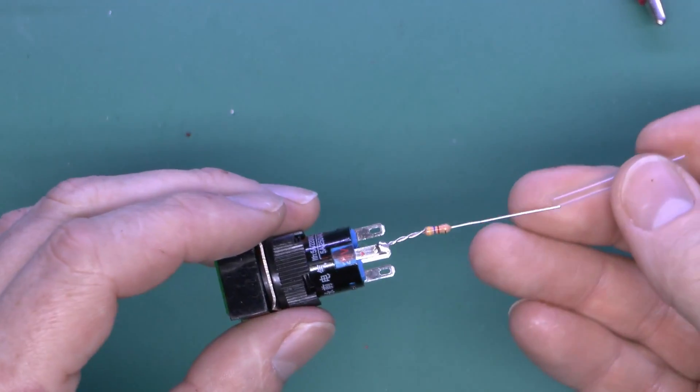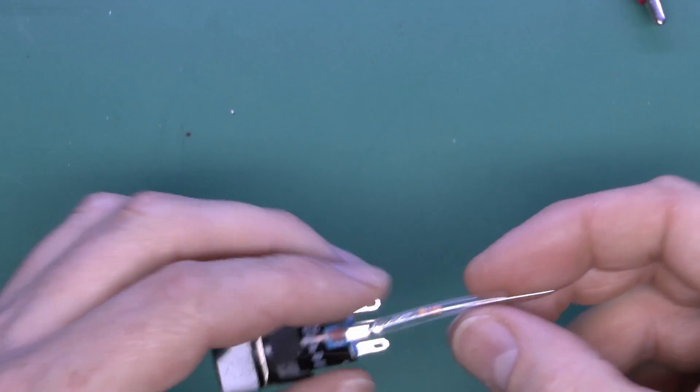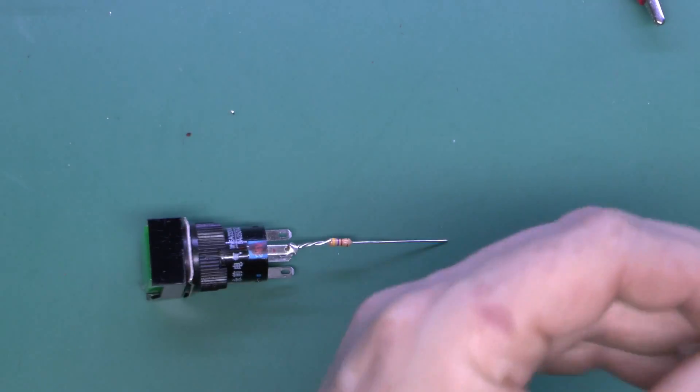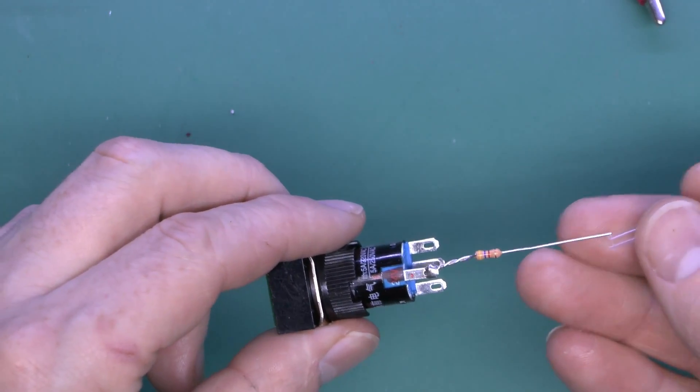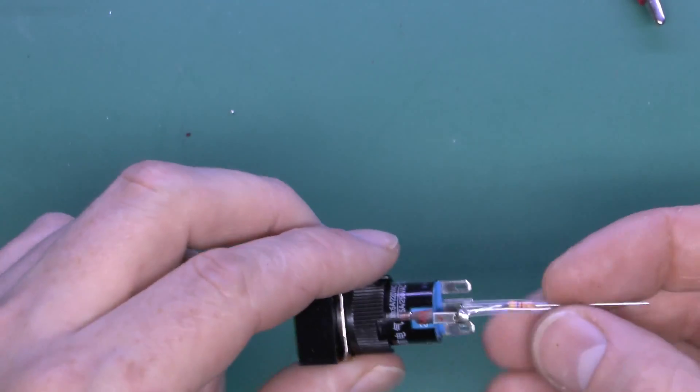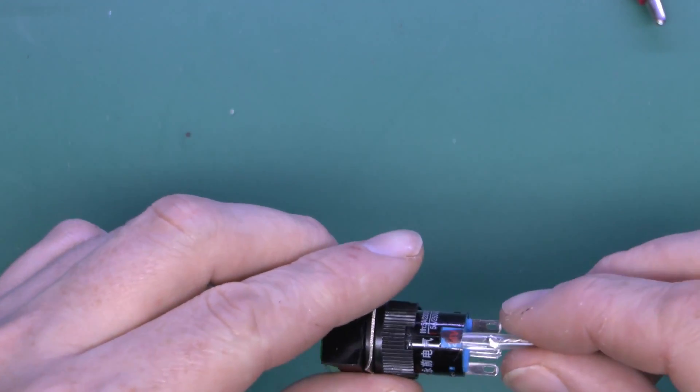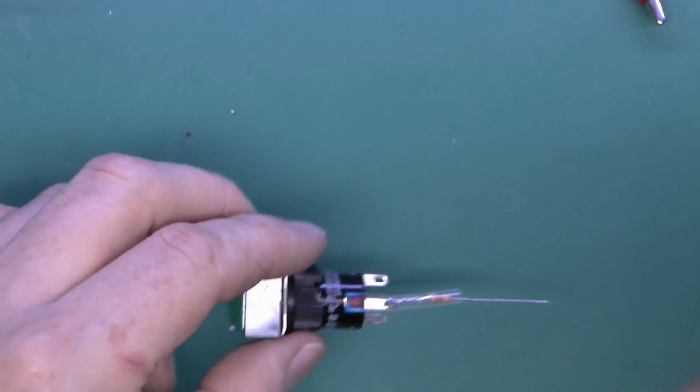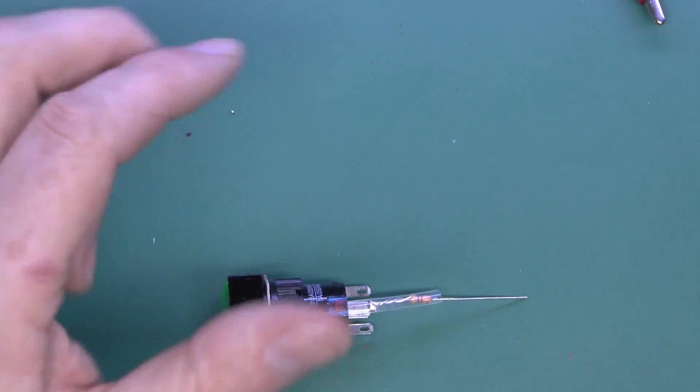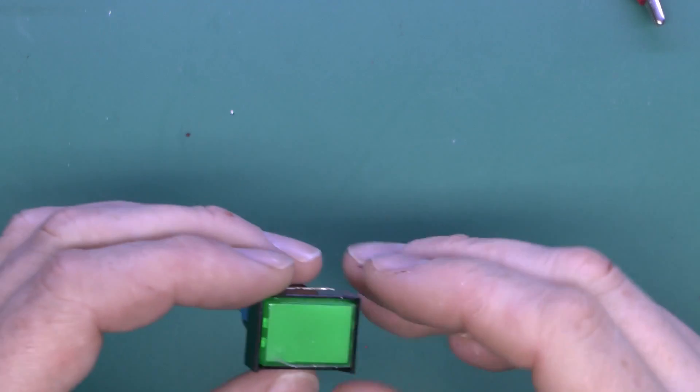So that's soldered up there, and then we'll just put this heat shrink sleeving over the top of that. I'll just trim that down a bit actually, it's a bit lengthy there. So we'll put that over the top of the resistor there and the soldered joint. And we can actually go right over the terminal on the switch as well, because of course any connection will now be made to the end here. And then we'll just shrink that in place with the hot air gun, and that's now converted to LED.